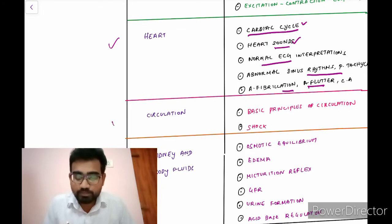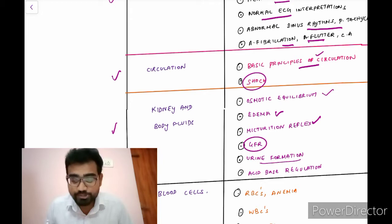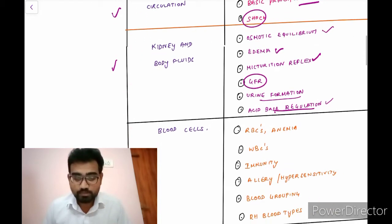And then coming to the circulation, very important shock. You should know the basic principles of circulation and also the very important shock. The gaseous exchange takes place. And coming to the kidney and the body fluids, the osmotic equilibrium, edema. And the micturition reflex, glomerular filtration rate, urine formation, acid-base regulation. Definitely you should know all this.